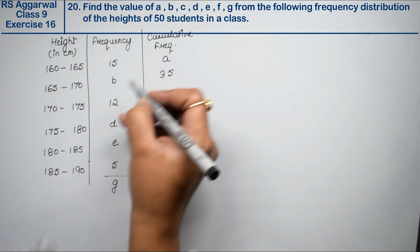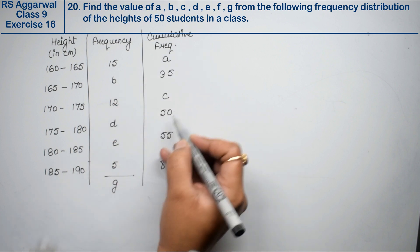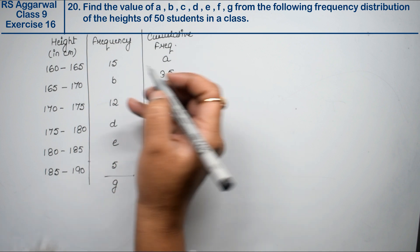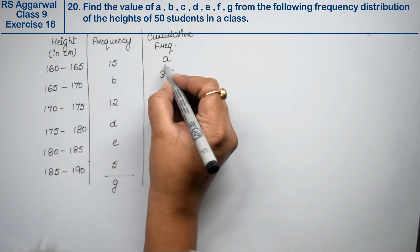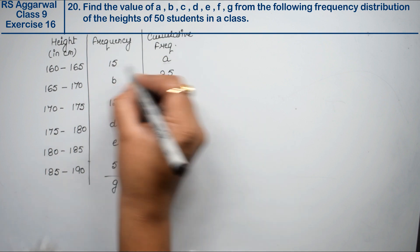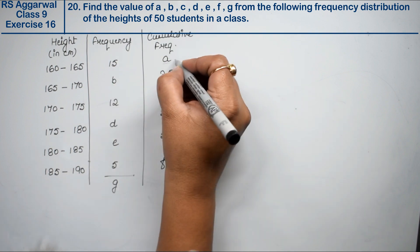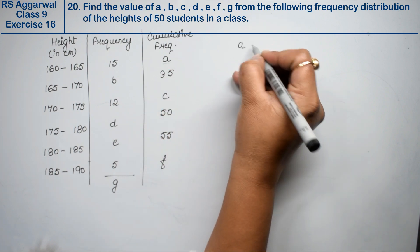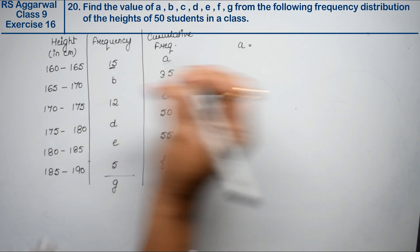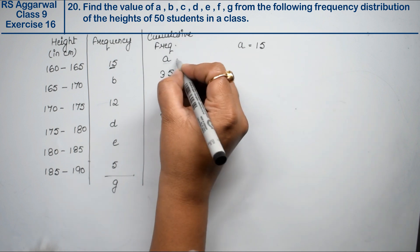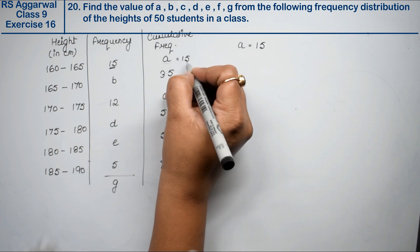First, this is the value of A, and then add the value of A. Now, what will A come here? First, as it is. A value is how much? A value is as it is frequency, 15. Right? So what will A come here? 15.